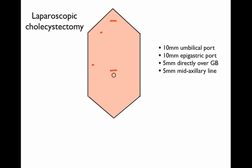The next operation commonly encountered is the laparoscopic cholecystectomy. Here we have a 10mm umbilical port, a 10mm epigastric port, a 5mm scar directly over the gallbladder in the mid-clavicular line, and finally, the fourth scar is a 5mm mid-axillary line port just above the umbilicus on the right-hand side.